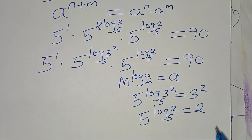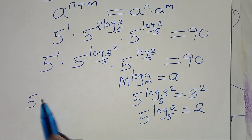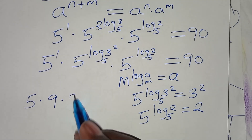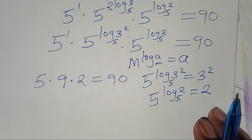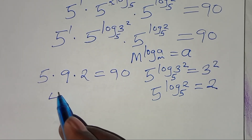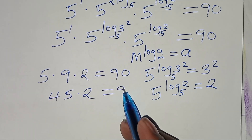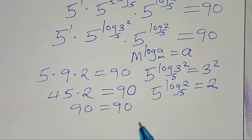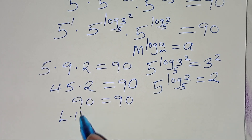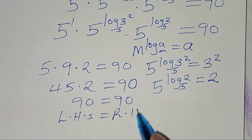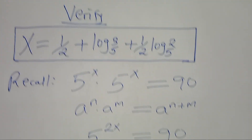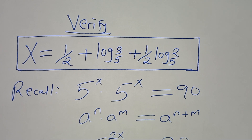Substituting these values, we have 5 to the power 1, which is 5, times 3 squared, which equals 9, times 2. So we get 5 times 9 times 2: that is 45 times 2, which equals 90. This confirms the left-hand side equals the right-hand side, and therefore the value of x, which is 1/2 plus log base 5 of 3 plus 1/2 log base 5 of 2, actually satisfies the equation.